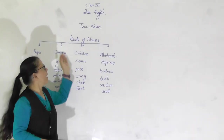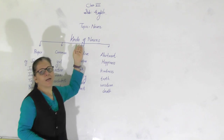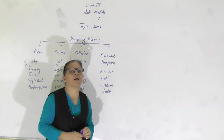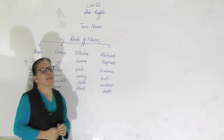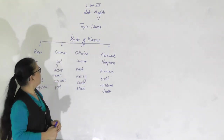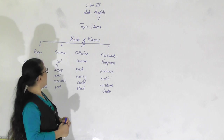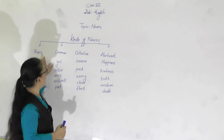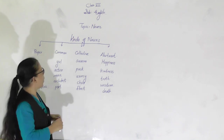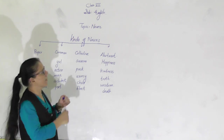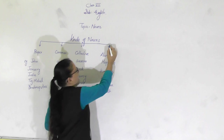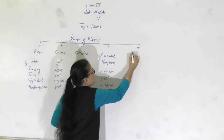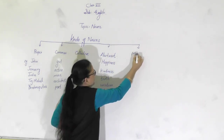Now let us move ahead. We'll learn about different kinds of nouns. There are five kinds of nouns: proper, common, collective, abstract, and material noun.